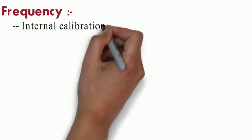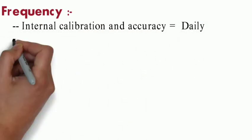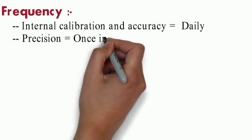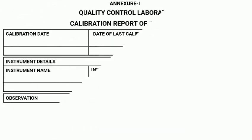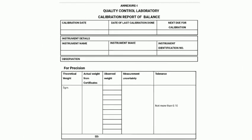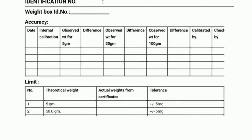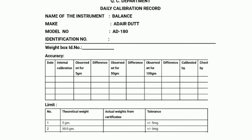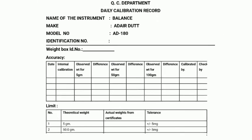Frequency: internal calibration and accuracy we have to check daily, precision once in a month. This is the Annexure 1 we discussed. We have to fill this annexure and Annexure 2, then submit. Responsibility to check is by executive and manager.